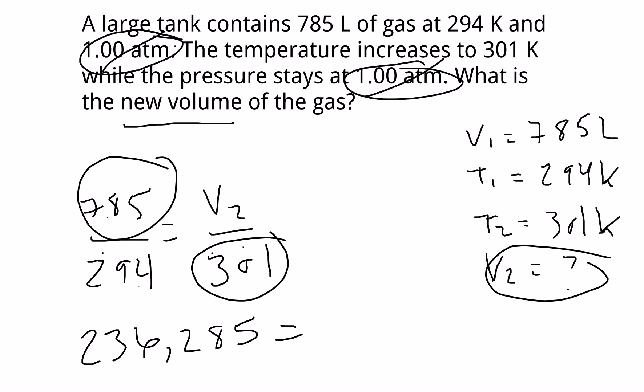And that's equal to, if I cross-multiply these two guys together, that's equal to V2 times 294 Kelvin. And so what I'll need to do is divide through by 294. That'll get rid of it on the V2 side.